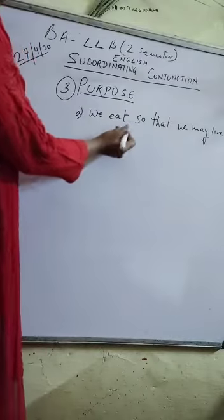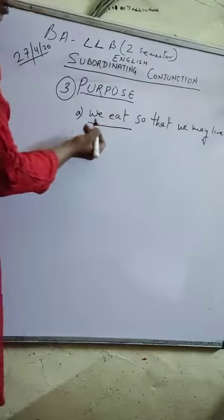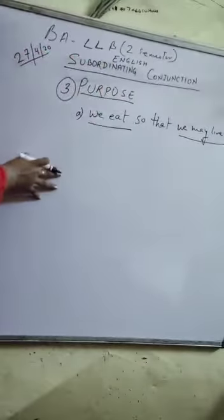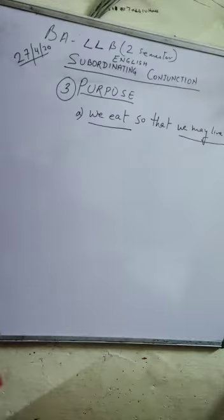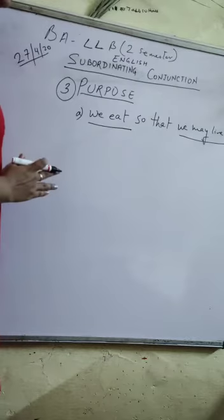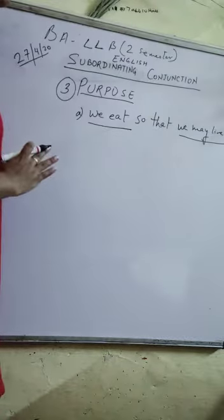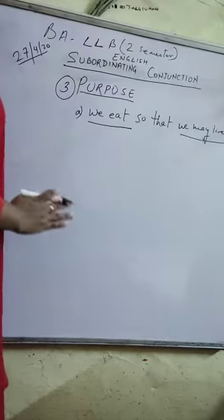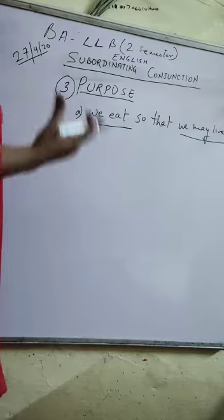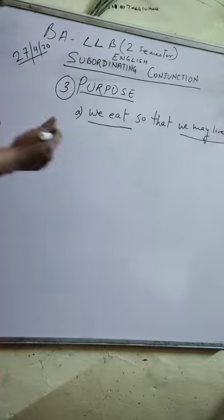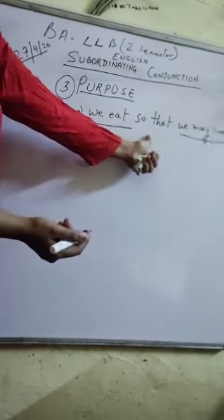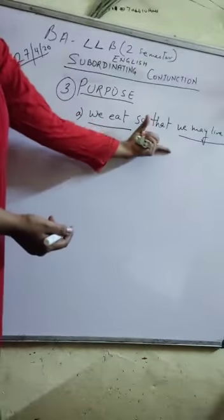Now we will study subordinating conjunction. We will study two sentences. First: 'We eat so that we may live.' When we talk about subordinating conjunction, we can forget the simple and compound sentence — we talk about the complex sentence. We have two sentences joined by 'so that', and the whole sentence is called a complex sentence.